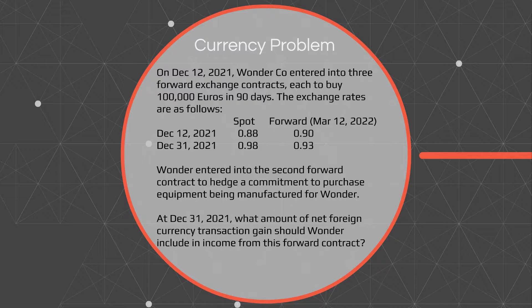In this problem we have Wonder Company, which has entered into three forward exchange contracts to buy a hundred thousand euros in 90 days. They provide you with some spot and forward exchange rates, and they tell you that the second forward contract is to hedge a commitment to purchase equipment being manufactured for Wonder. The question is: at December 31st, 2021, what amount of net foreign currency transaction gain should Wonder include in income from this forward contract?